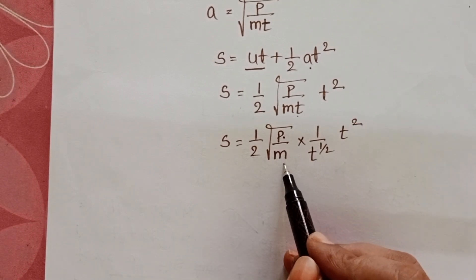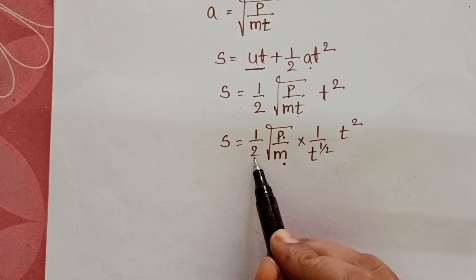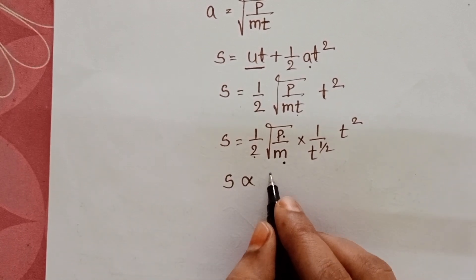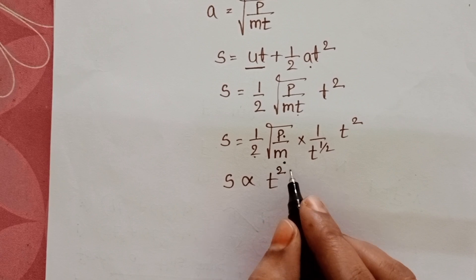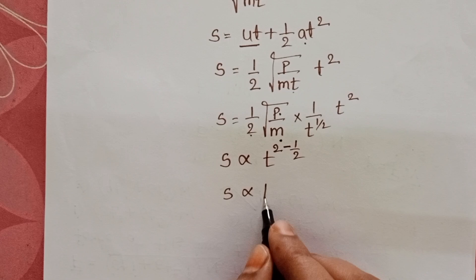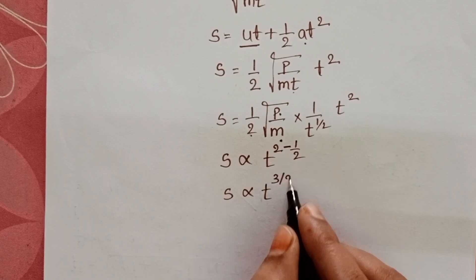Power constant, mass of the body also constant, 2 is constant. So S directly proportional to t power 2 minus 1 by 2. Then displacement is directly proportional to t power 3 by 2.